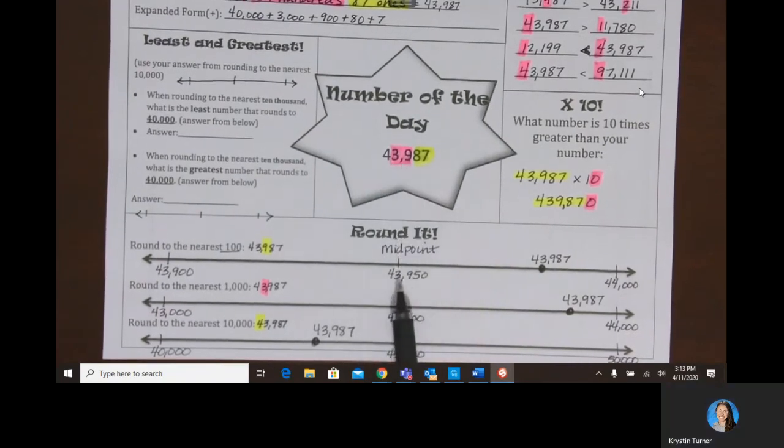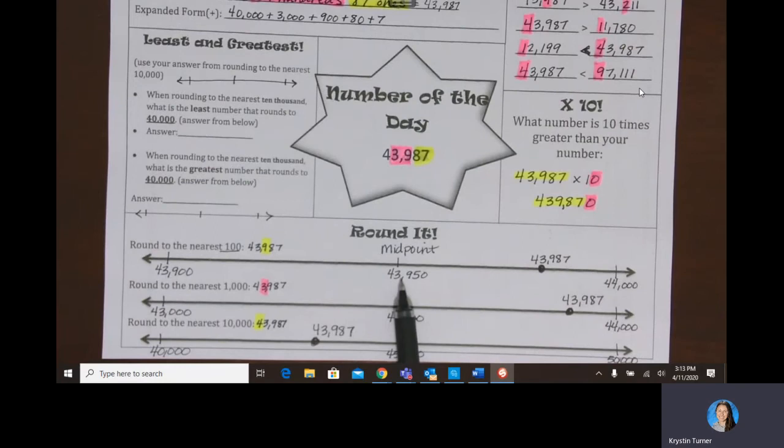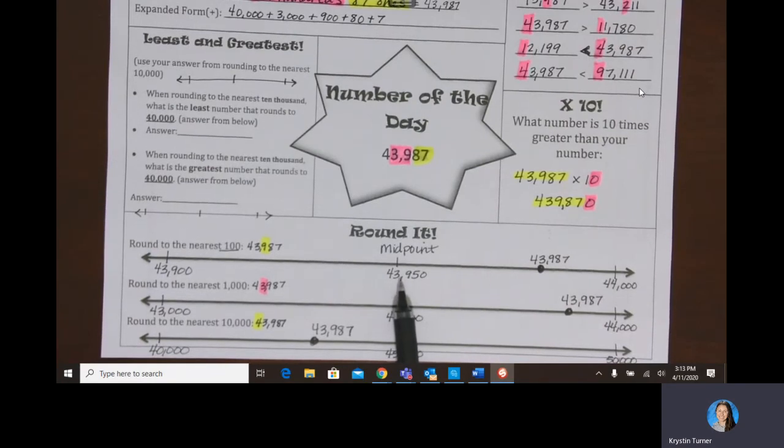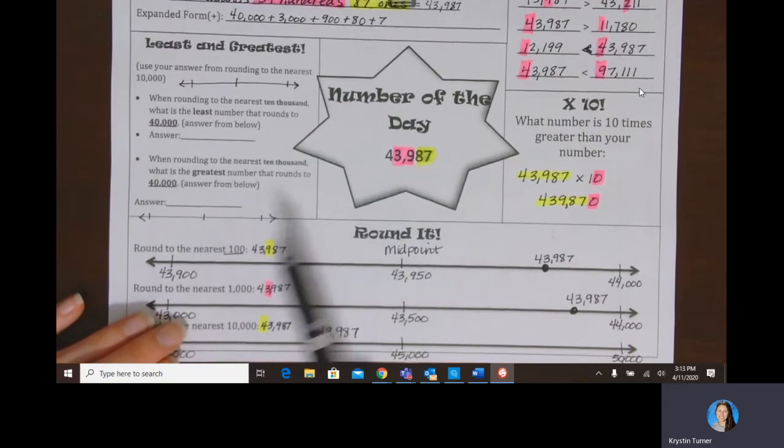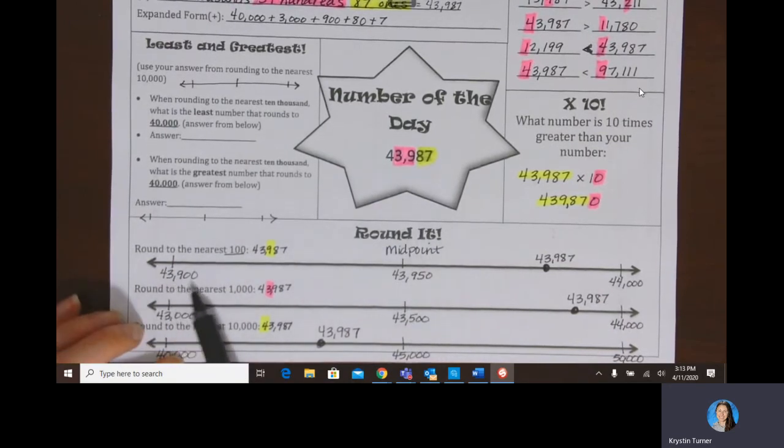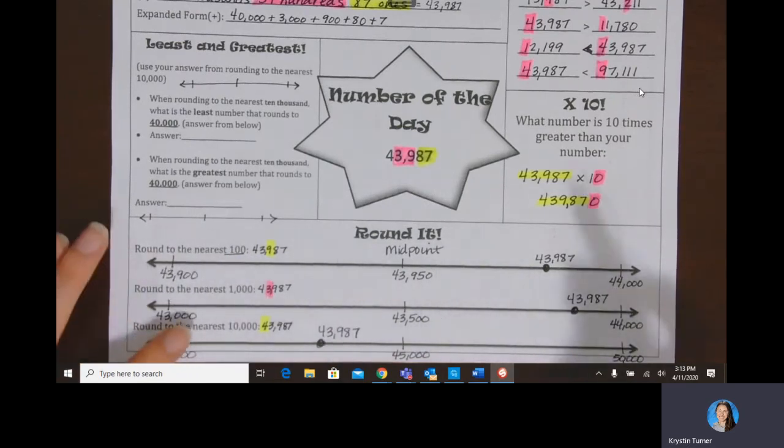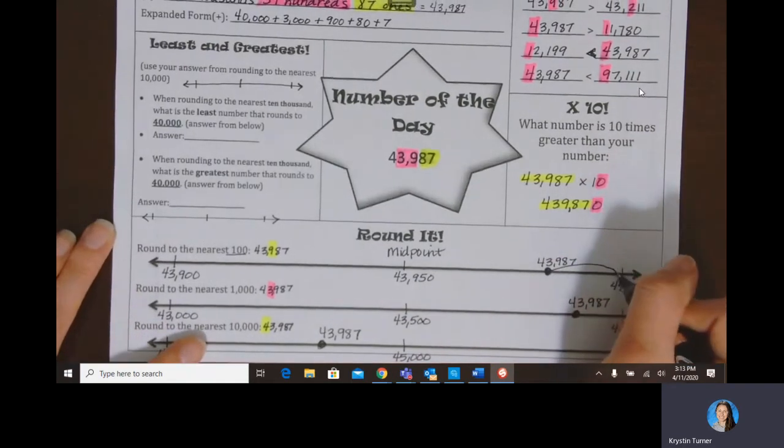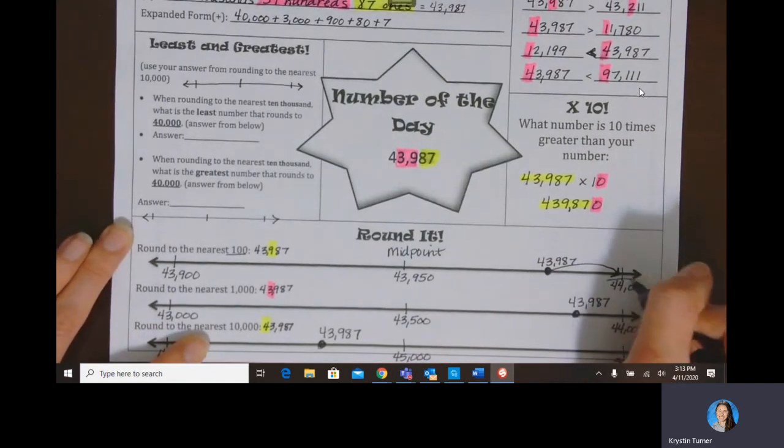So now we're going to take this midpoint and we're going to compare it to this number. 43,987 would be more than 43,950, right? 87 is more than 50. So when I'm thinking about 43,987, it lives between 43,900 and 44,000, and it's closer to 44,000. So we're going to round up to 44,000.